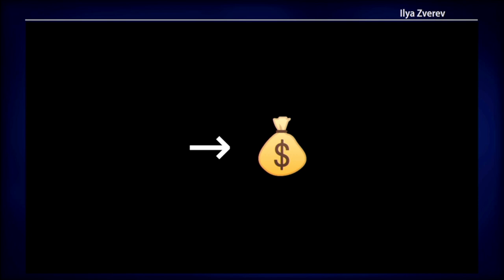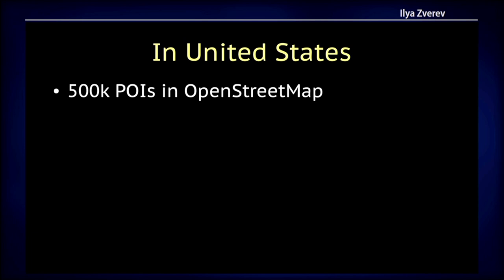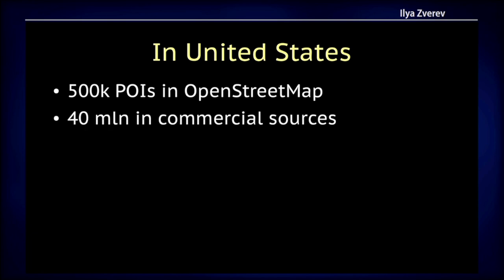When I was working for a big American company to assess the quality of multiple POI datasets, the state of OpenStreetMap was obvious from the beginning. In the United States, it has only half a million POI. In comparison, all commercial data stores have 40 million — 80 times more. That fact alone was pretty decisive.